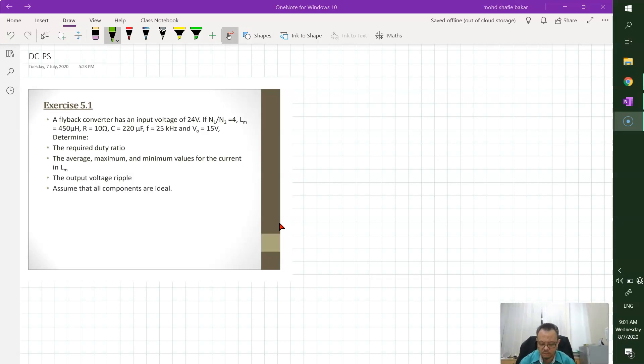Exercise 5.1 stated that the flyback converter has an input voltage of 20 volt and the ratio for the transformer n1 over n2 equals to 4, with the magnetic inductance equals to 450 micro Henry, R equals to 10 Ohm, capacitor equals to 220 micro, with frequency 25k and the expected output 15 volt.